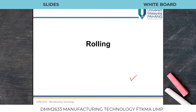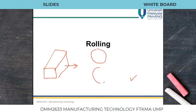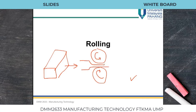What is rolling process? Rolling process is the process of basically reducing the thickness or changing the cross section of a long workpiece by compressive force. If we have a square shape billet, we put it into two very large rollers which are moving in the same direction. The thick sheet goes inside and is compressed.